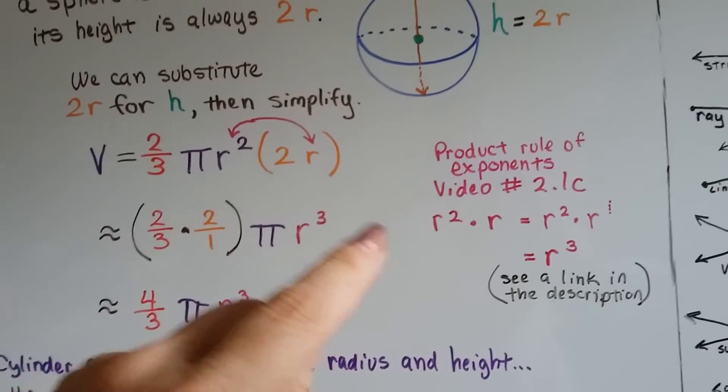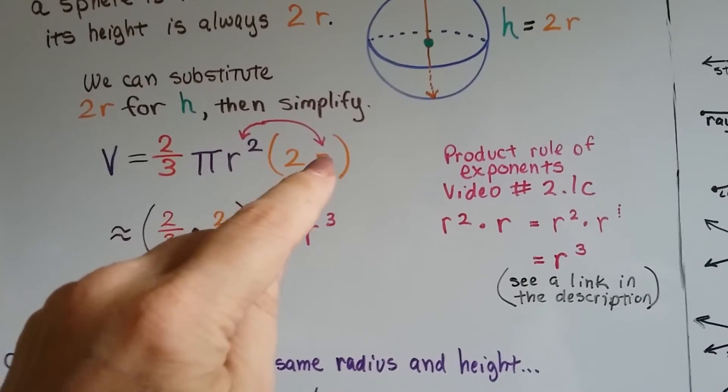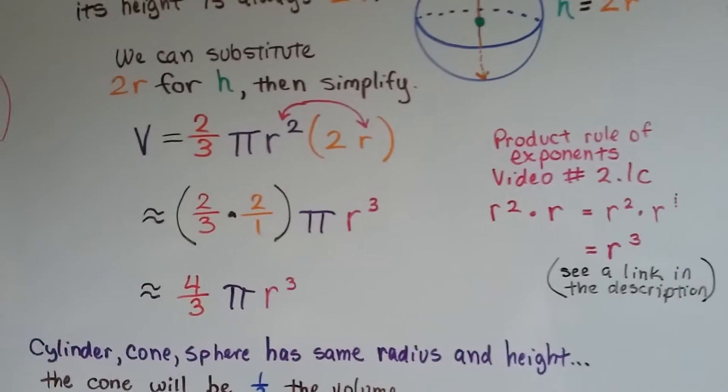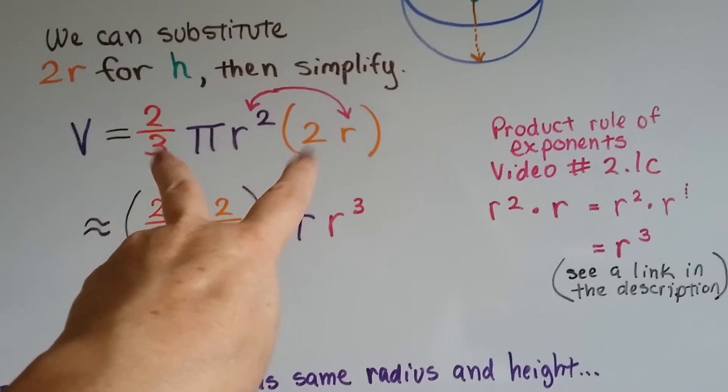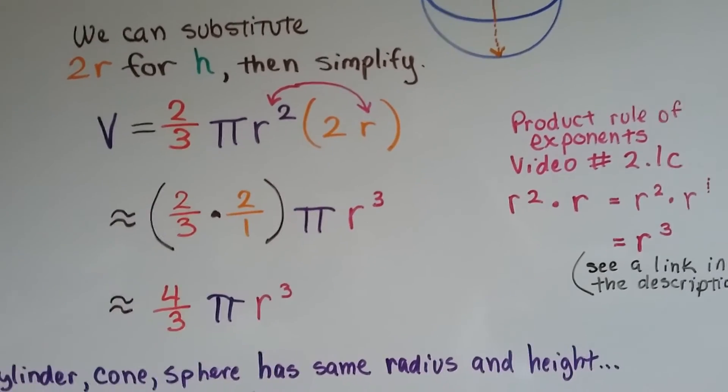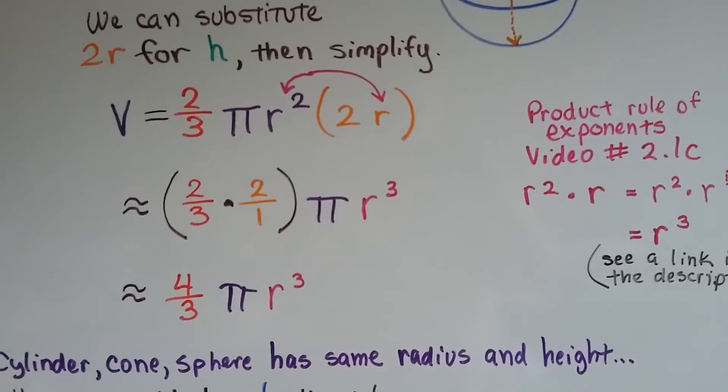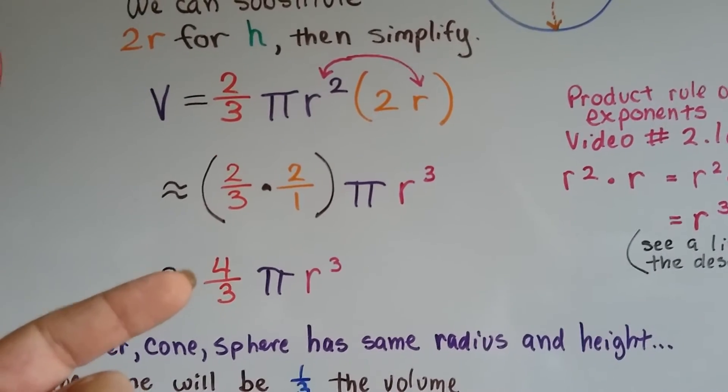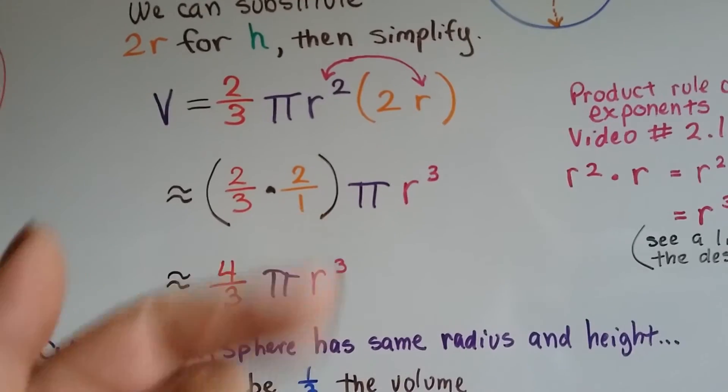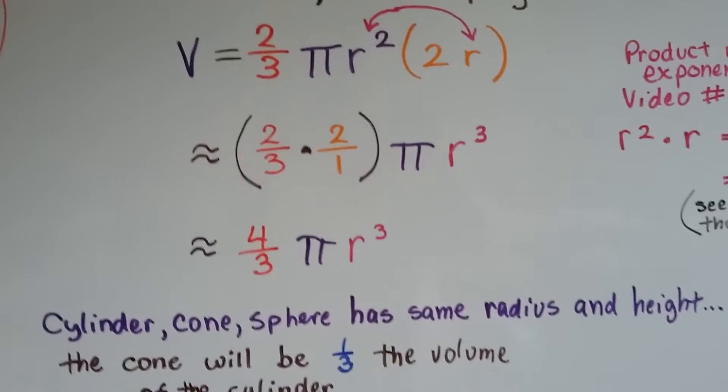So now, instead of having this r squared and this r, we have r cubed. Now we need to multiply two-thirds times this two, because they're like terms. Two-thirds times two is four-thirds. So now our formula says v is equal to four-thirds pi r cubed. That's the formula we can use.